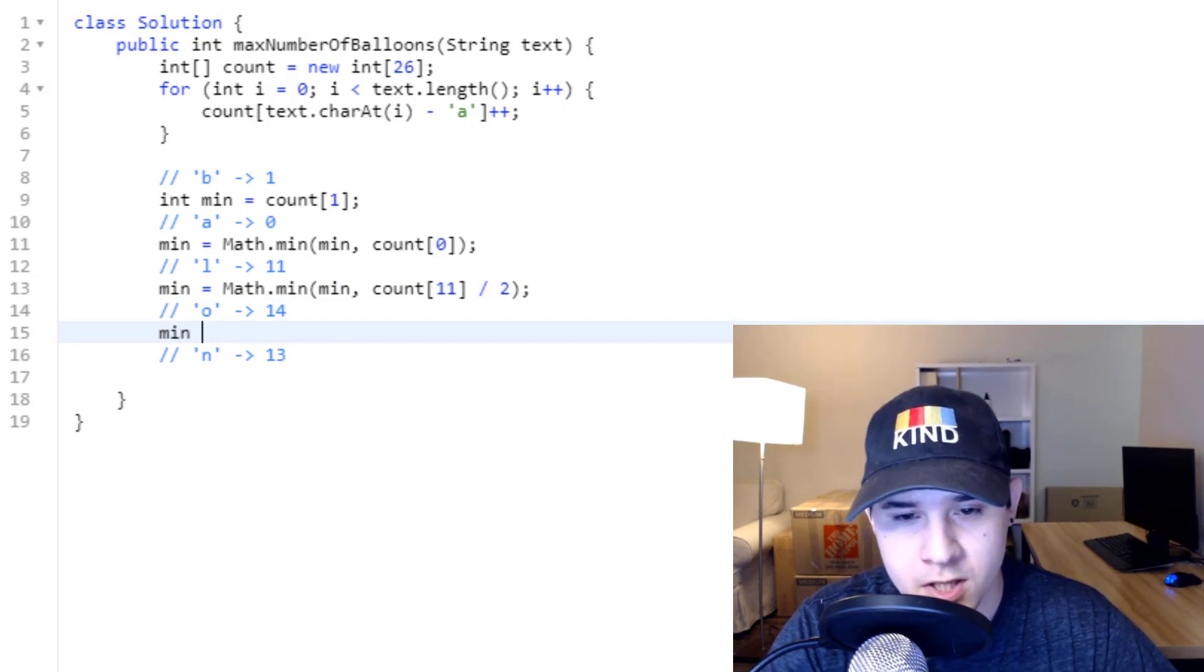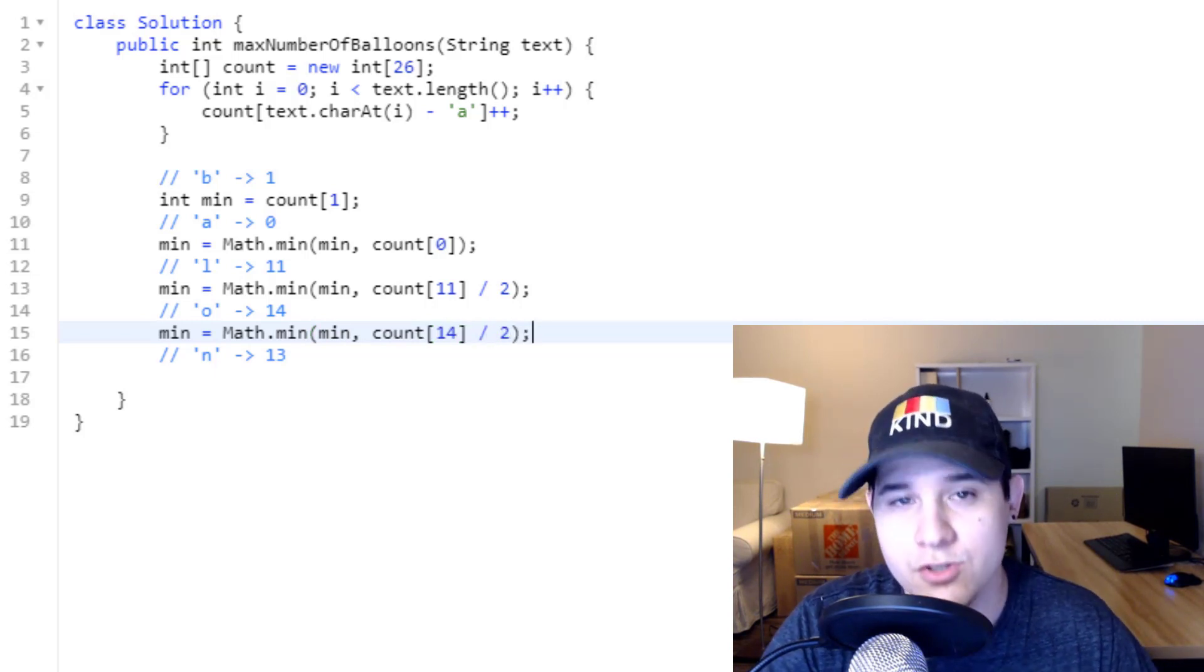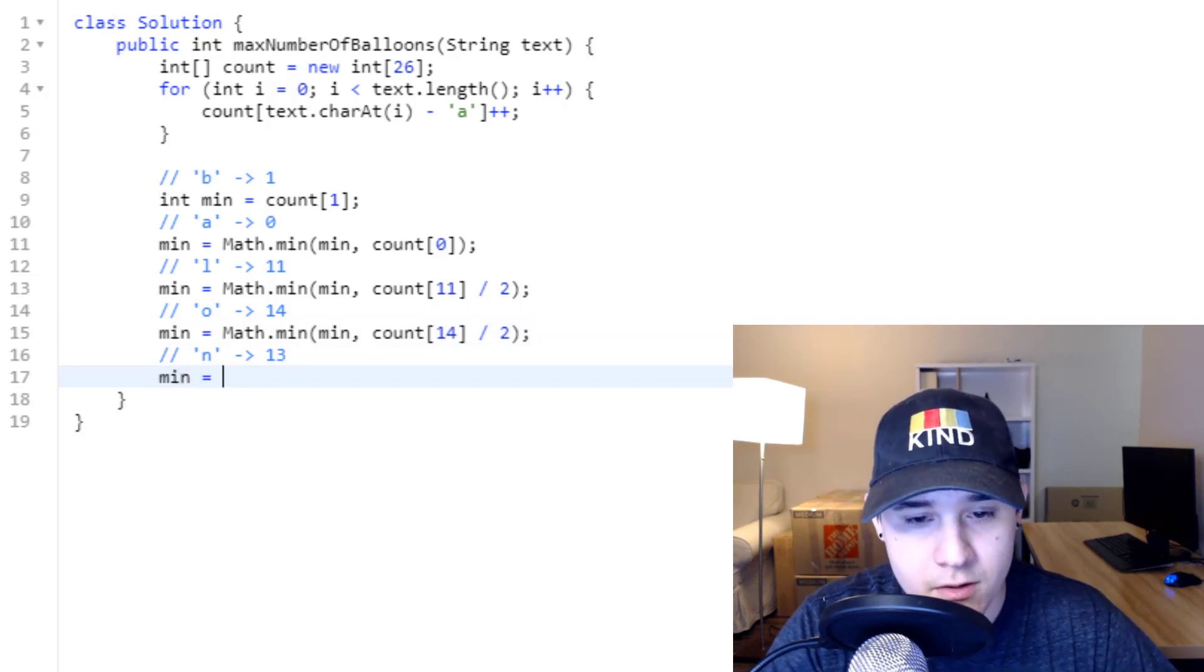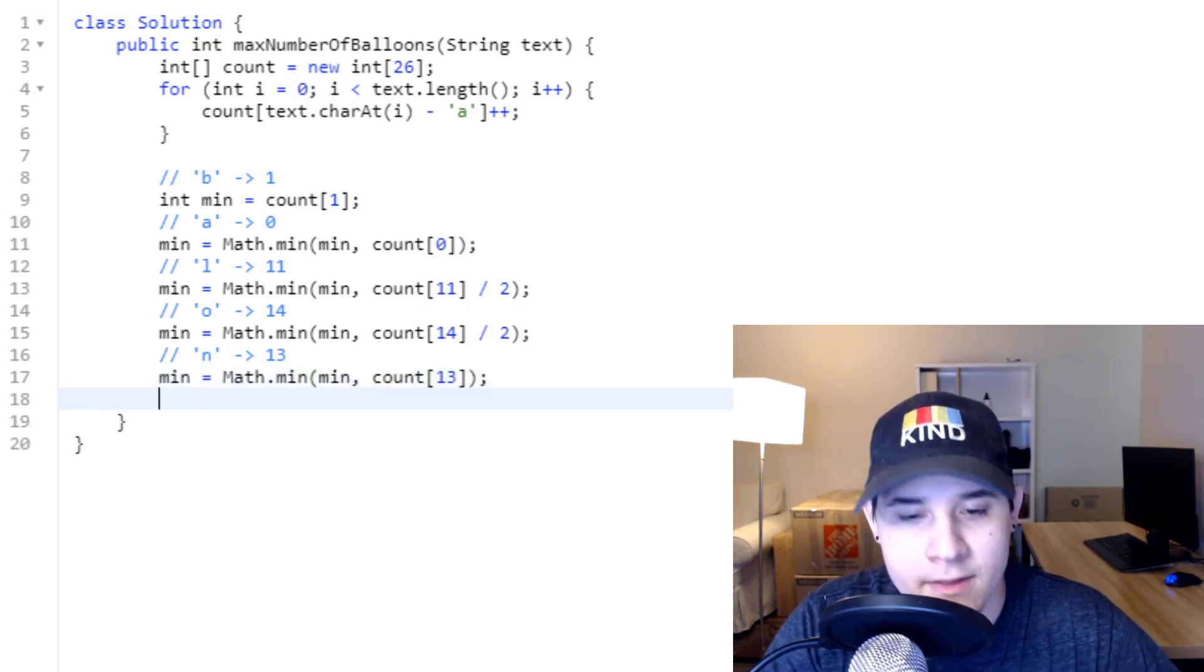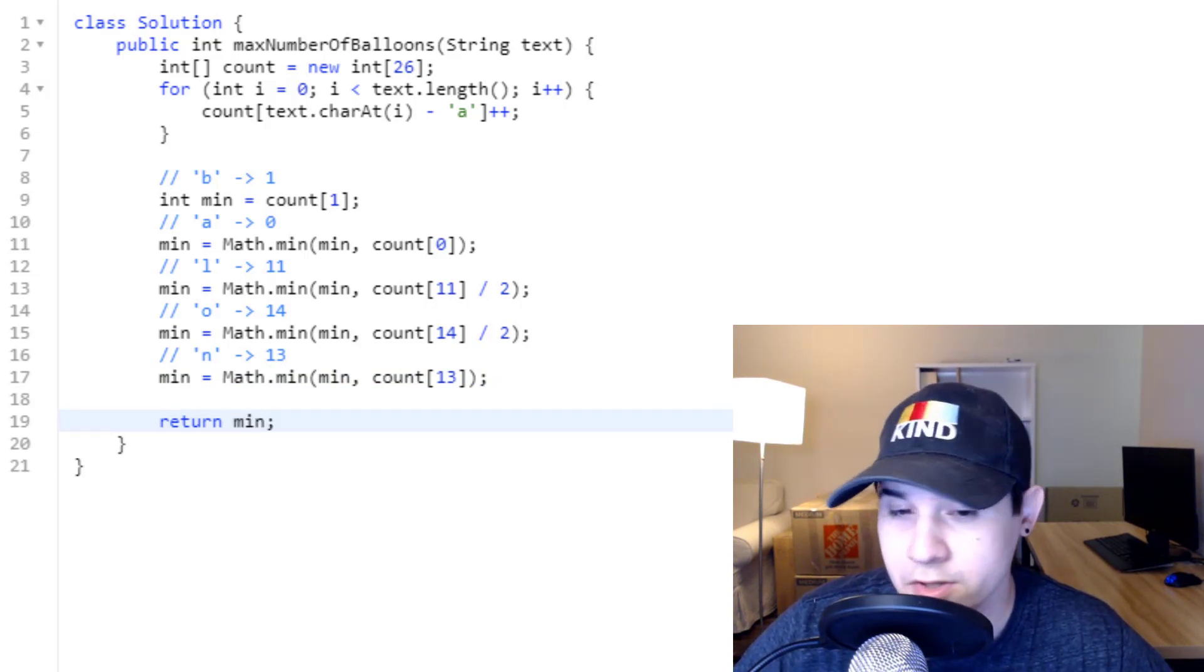We move down to character o, min, math dot min, between min, count at index 14, divided by two. o has two occurrences. And then finally, we come down to character n, min equals math dot min, between min and count at index 13. And then just return min. So let's just make sure the solution works.